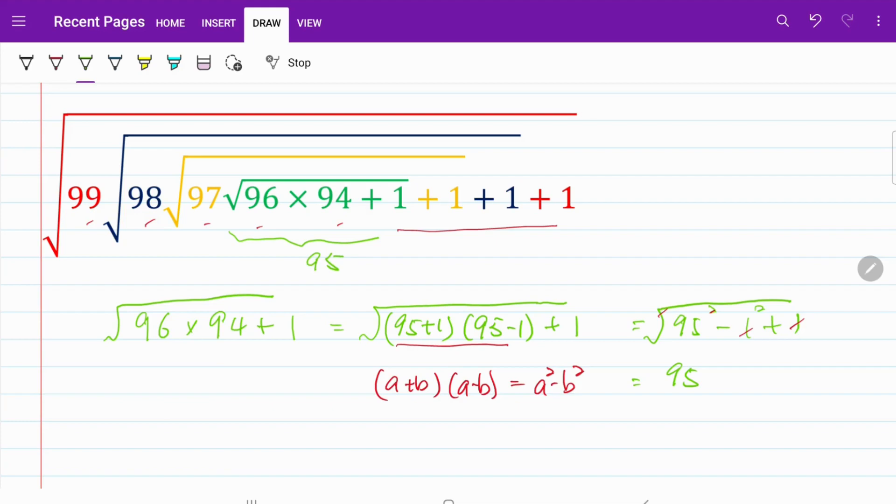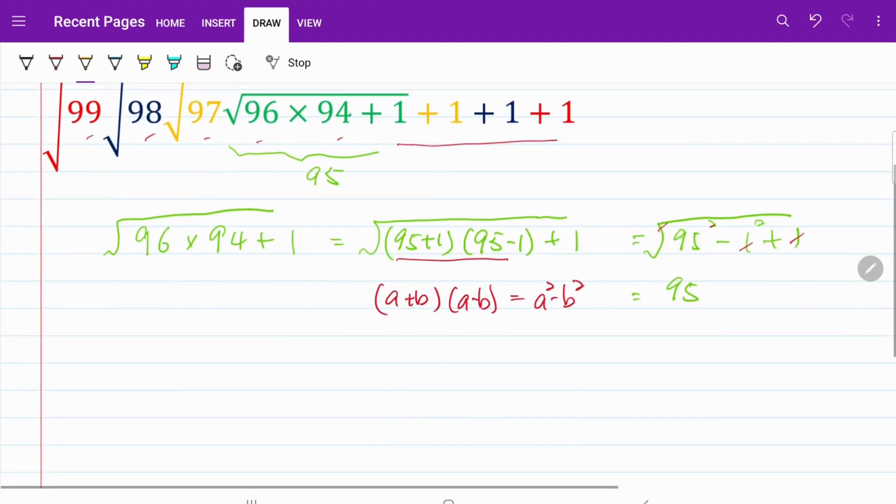Let's go ahead and deal with our yellow square root. Let me change the color of my pen. Now what I have is 97 multiplied by 95 plus 1. The whole thing is within a square root. Again, I can easily convert that to the middle number, which is 96, meaning now I have 96 plus 1, 96 minus 1 plus 1.